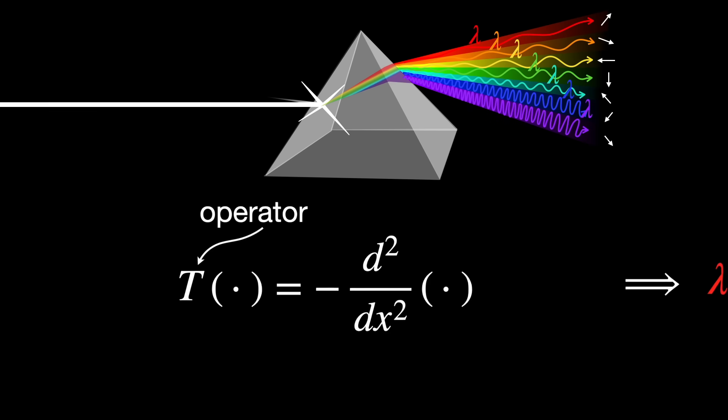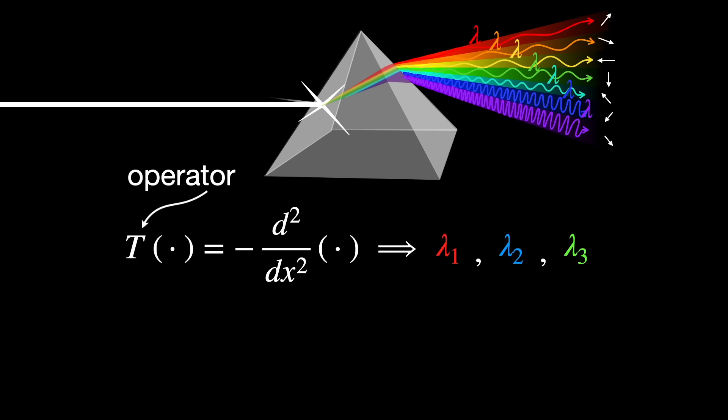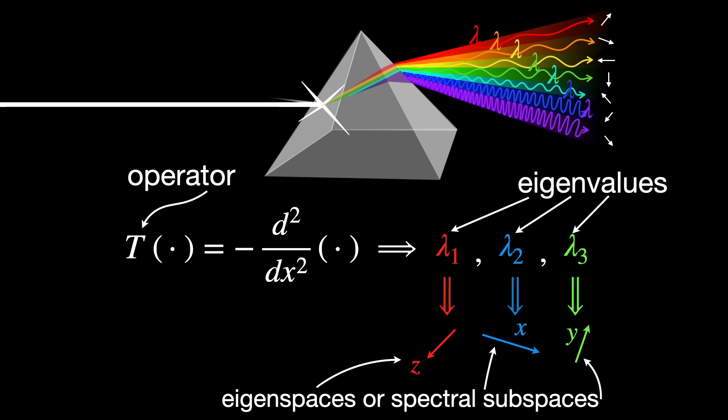But the spectral theorem decomposes it into simpler parts, each associated with a frequency or wavelength, so the eigenvalue, acting along a specific color direction, so the eigenspace or spectral subspace.